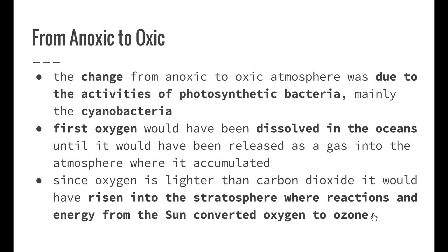The change from anoxic to oxic was due to the activities of photosynthetic bacteria, mainly the cyanobacteria. The first oxygen would have been dissolved in the oceans until it accumulated enough to be released as a gas into the atmosphere, where it then accumulated again. Since oxygen is lighter than carbon dioxide, it would have risen into the stratosphere, where reactions and energy from the sun converted this oxygen into ozone.